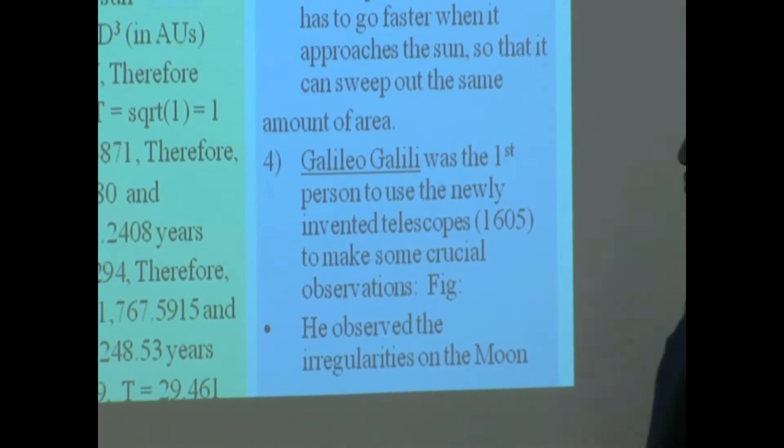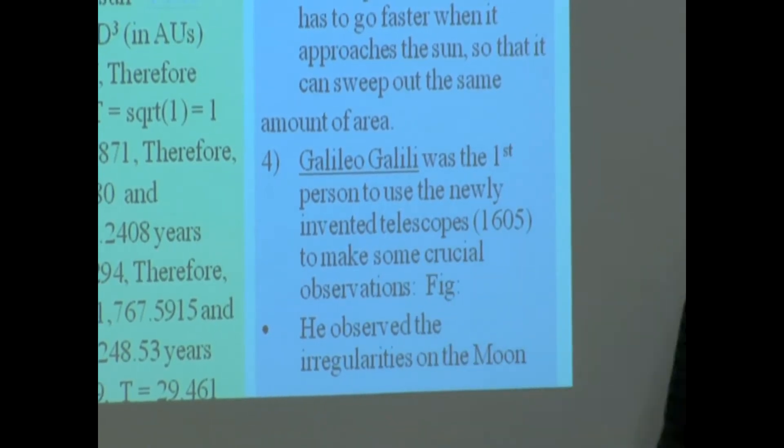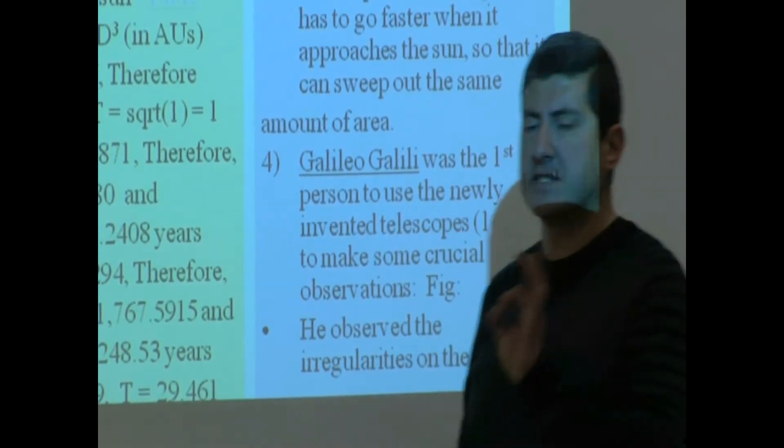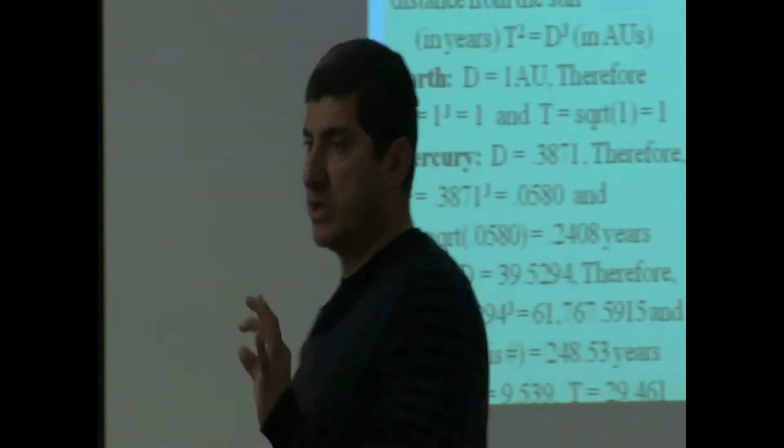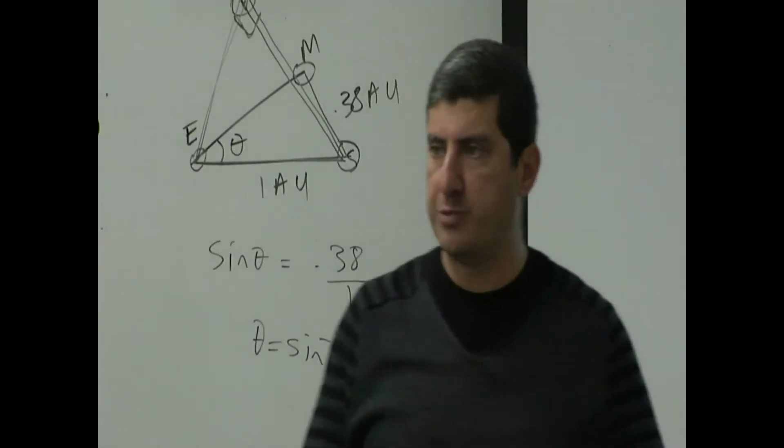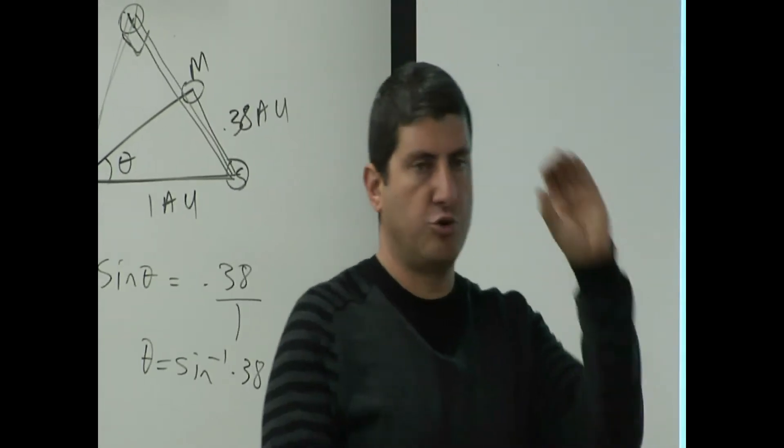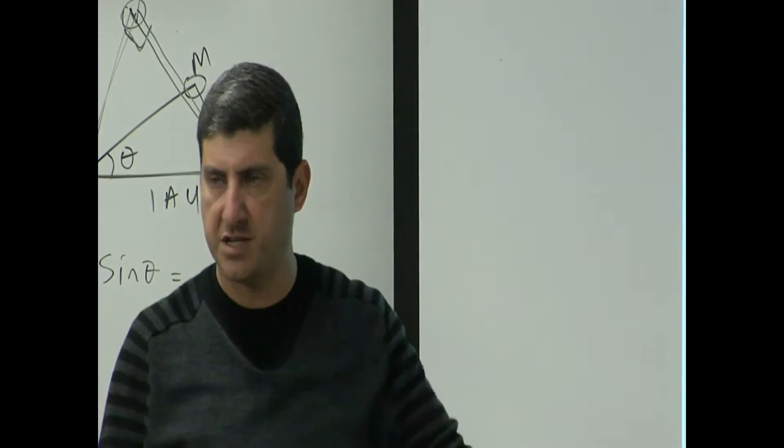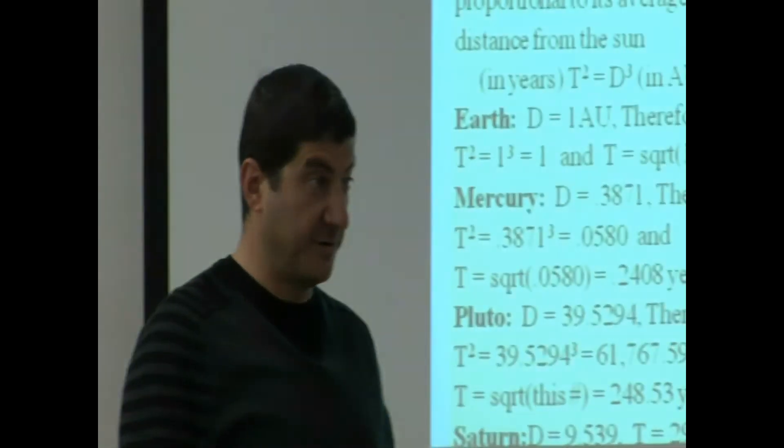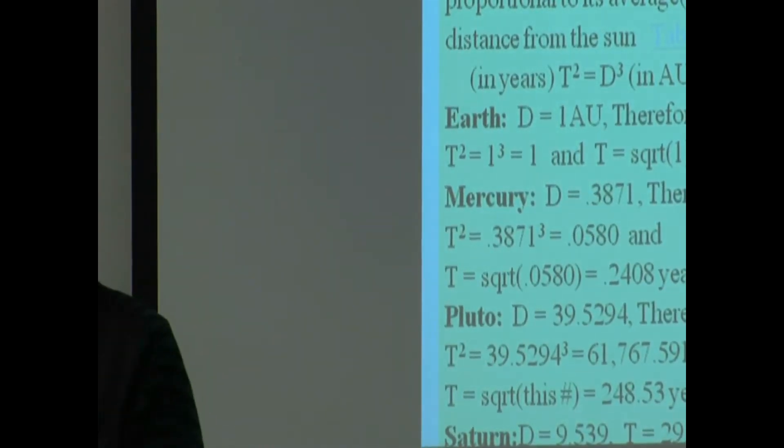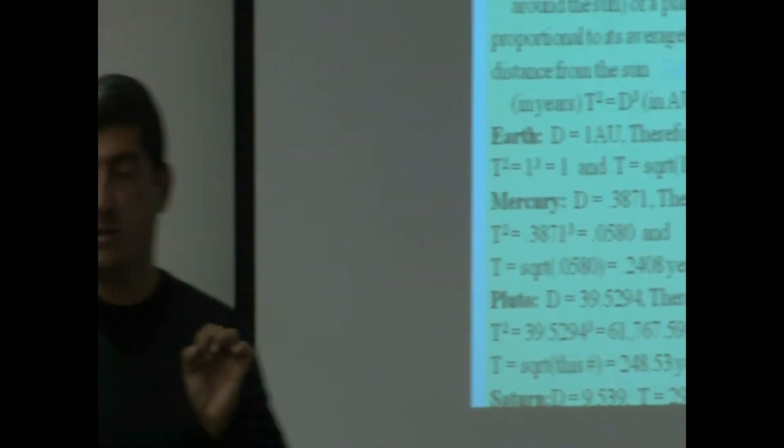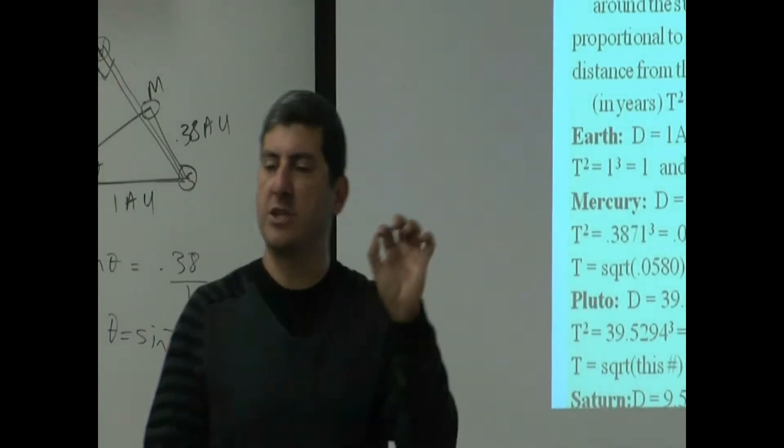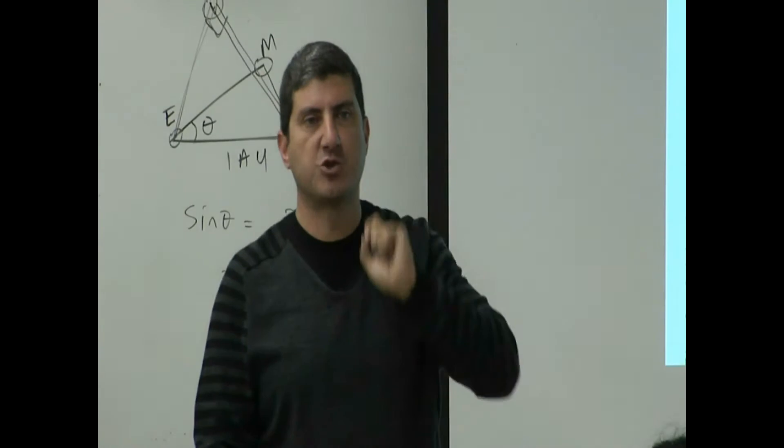He was the first person to use the newly invented telescope. In 1605, an Italian glassmaker had invented one of the first good telescopes. And Galileo took this and started pointing it to the sky and making some crucial observations based on this. If you go to the Griffith Observatory, you will see a replica of this telescope that Galileo used. And you will also see some replicas of his drawings that he made.